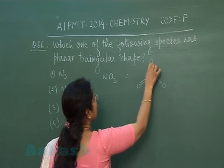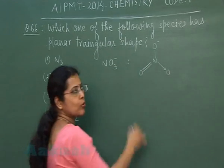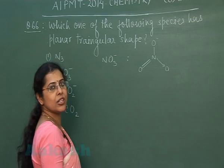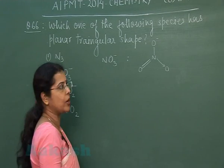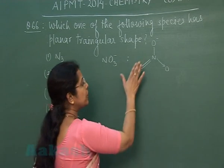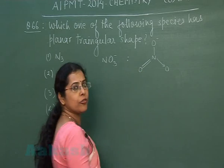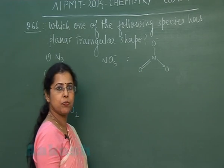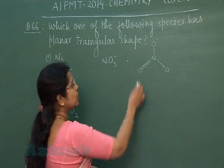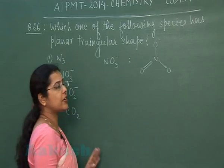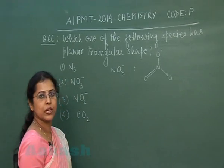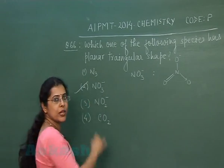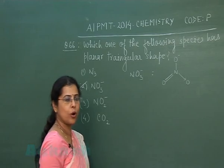The nitrate ion has one oxygen with a double bond, one with a coordinate bond, and one negatively charged oxygen with a single bond. The orientation of the three oxygen atoms is in the same plane, meaning this ion is triangular planar in shape. The correct answer is the second option.